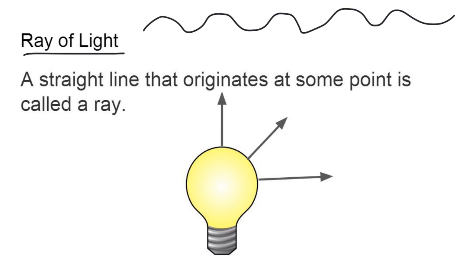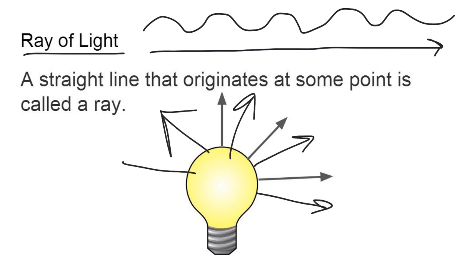So rather than showing that wave form, we're really concerned about the direction it's moving, so we'll draw it as a straight line. So if you think about a light bulb, for example, it has millions of rays of light coming off of it, any light source.